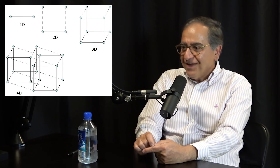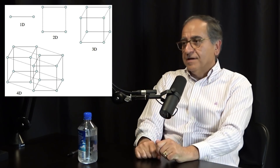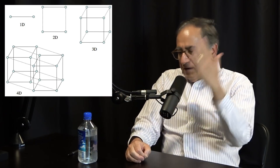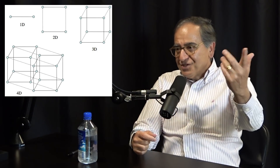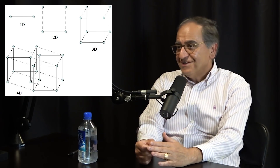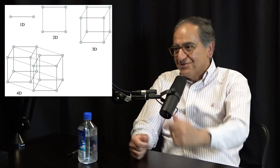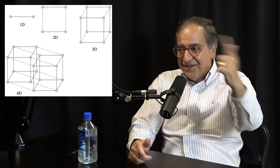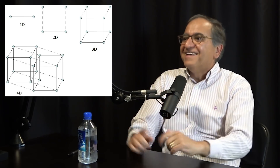So in two dimensions, one plus one equals two, and two minus two is zero — they intersect at a zero-dimensional point. In three dimensions: a two-dimensional plane and a point don't intersect. A plane and a line — two plus one is three, and three minus three is zero — they meet at a point. A plane and a plane: two plus two is four, and four minus three is one — they intersect on a one-dimensional line.